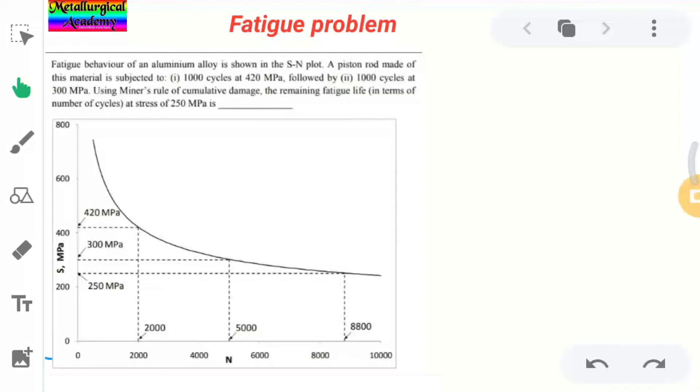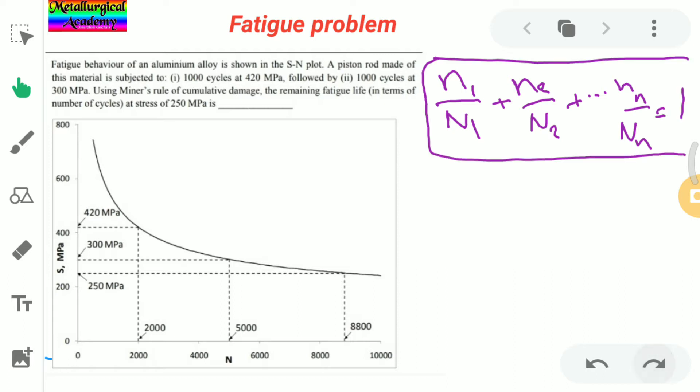Welcome to Metallurgical Academy friends. Today we would like to solve a problem based on fatigue. Here we need to solve using Miner's rule. The Miner's rule was n1 by N1 plus n2 by N2 or nn by N is equal to 1.